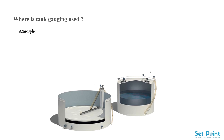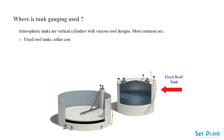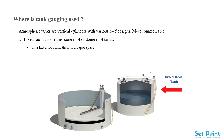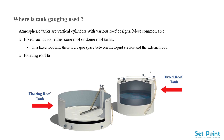Atmospheric tanks are vertical cylinders with various roof designs. The most common are fixed roof tanks, either cone roof or dome roof. In a fixed roof tank, there is a vapor space between the liquid surface and the external roof. Floating roof tanks have various designs; in a floating roof tank, the liquid surface is covered by either an internal or an external floating roof.